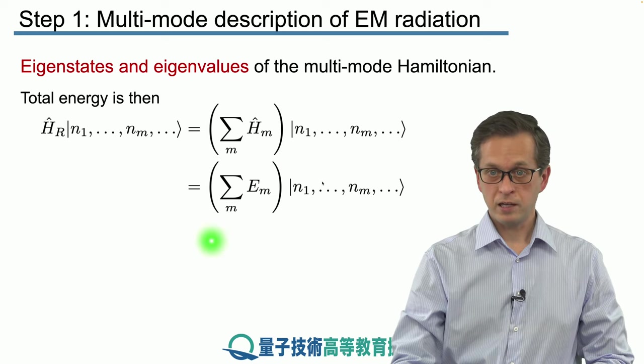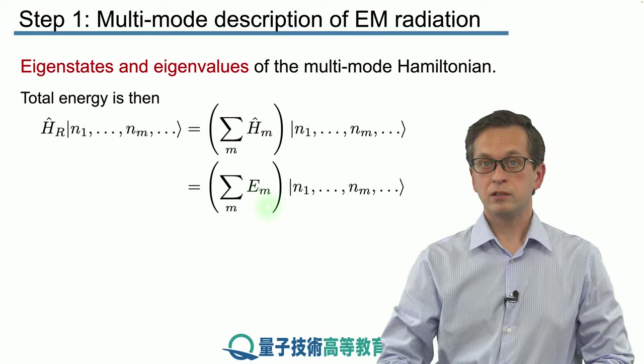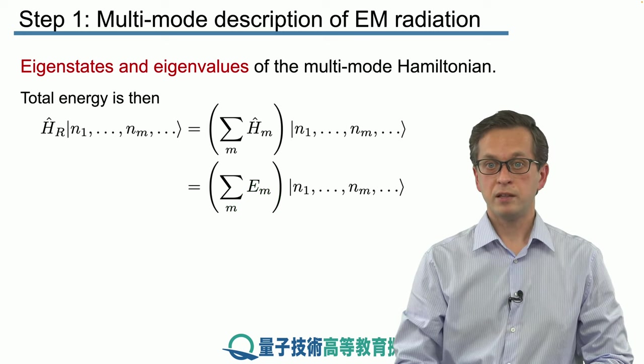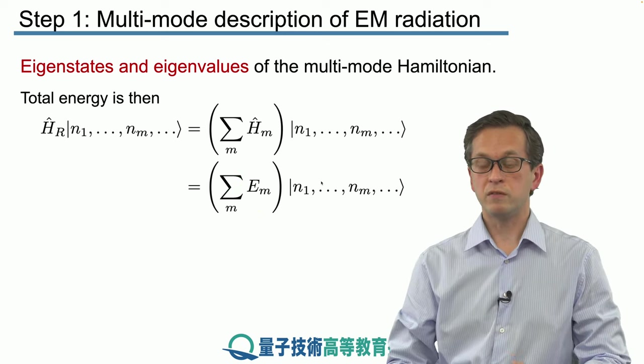That pulls out the eigenvalue em. So the total energy of the multimode field in the multimode number state is given by the sum of the energies of each individual mode.